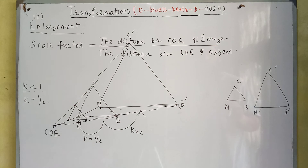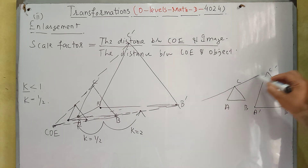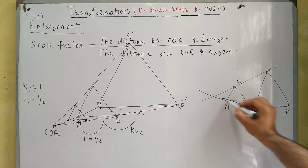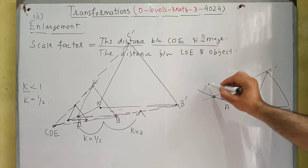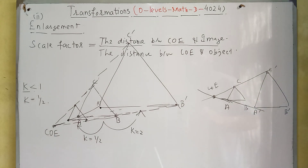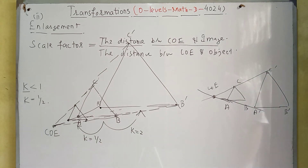If we have object and image and need to find the center of enlargement, what we do is join object points with their corresponding image points — C joined with C-dash, A joined with A-dash. The point of intersection of these two lines will be our center of enlargement. We only need to do this for two coordinates — only two coordinates are enough. Just join the coordinates of the object with the image; the point of intersection of these straight lines will be our center of enlargement.